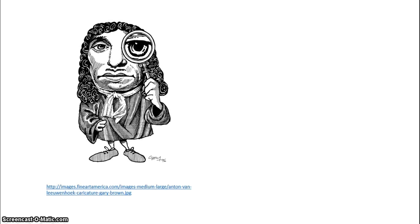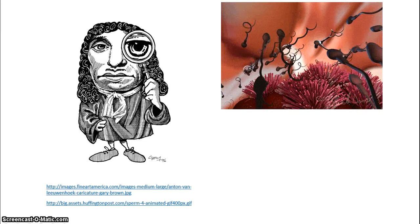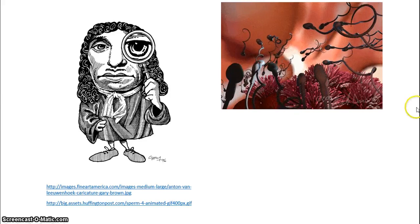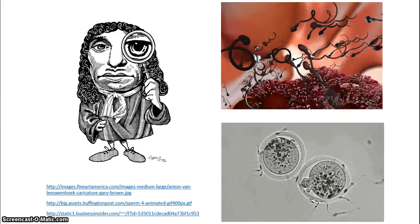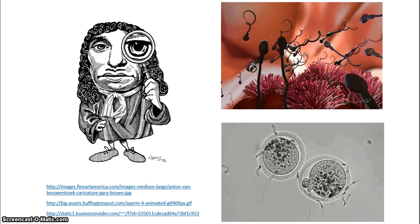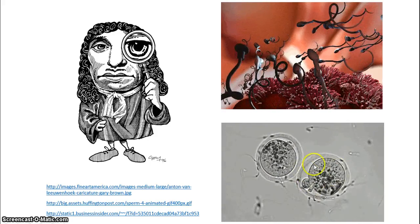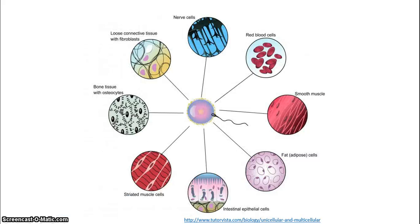Van Leeuwenhoek also made observations about how sperm and egg cells came together to develop the next generation. What we see is egg cells with a multitude of sperm around them attempting to fertilize. Once we follow the zygote — this fertilized egg cell — further, we can also trace how all of the different cells and tissues of your body come about from this original fertilized egg, or zygote.